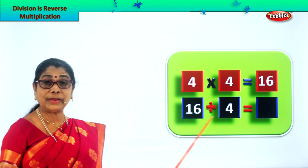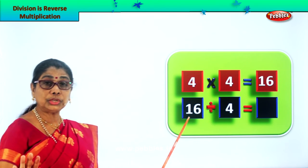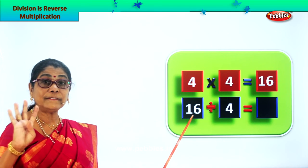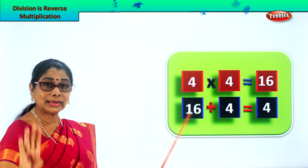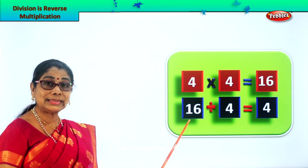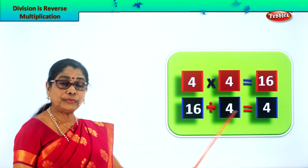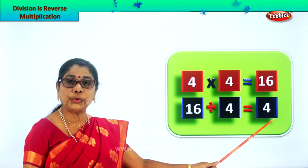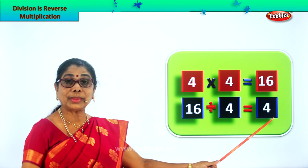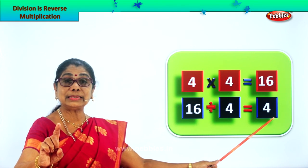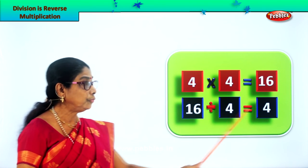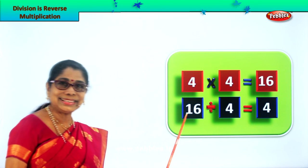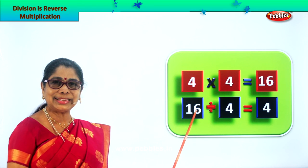16 divided by four — four goes into 16 four times. Four fours are 16. So your answer is 16 divided by four is equal to four. Division is reverse multiplication — four into four, four fours are 16. Did you enjoy the exercise?